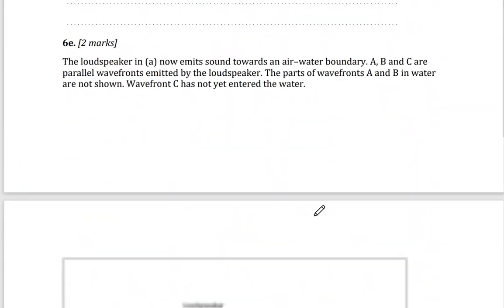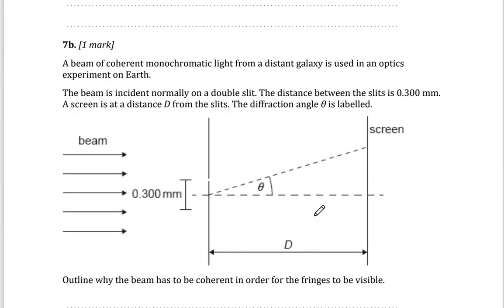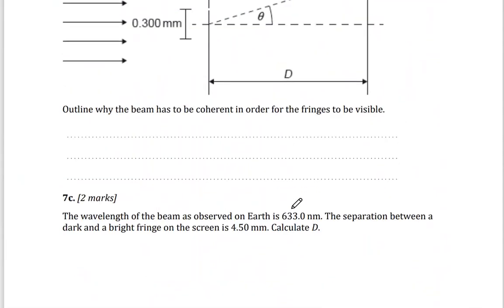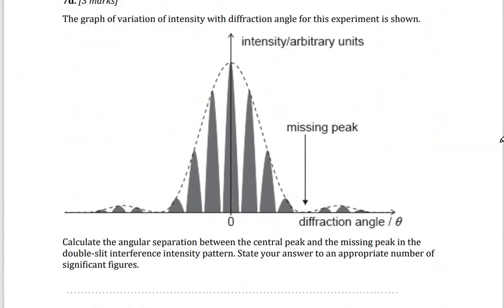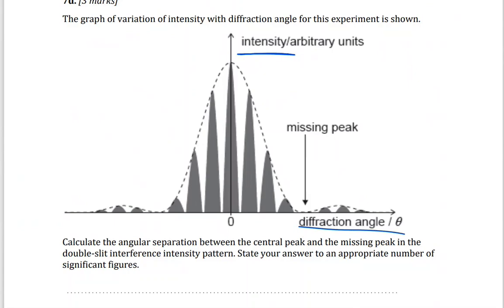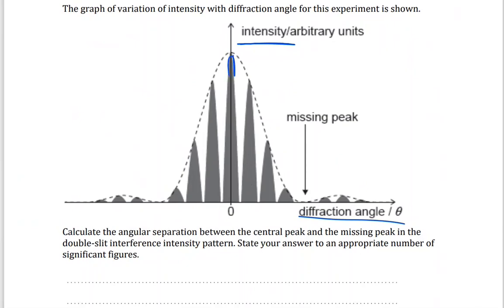Now for the higher-level question — the HL students study this extra topic. Here you have a graph of variation of intensity with diffraction angle (intensity versus diffraction angle). Calculate the angular separation between the central peak and the missing peak in the double slit pattern. I need to find the angle theta to the missing peak.